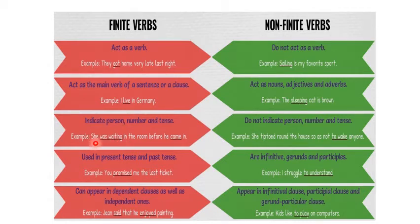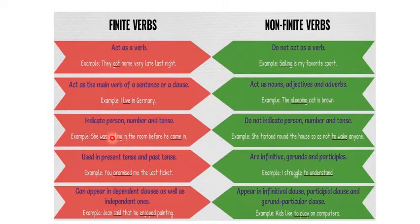If instead of 'she' we say 'they,' then 'was' becomes 'were.' So the verb is changing. It was past continuous — she was doing that before, at a time before. But if she is doing it in the present, 'was' becomes 'is.' That is how it changes. The finite verb changes according to all these things.